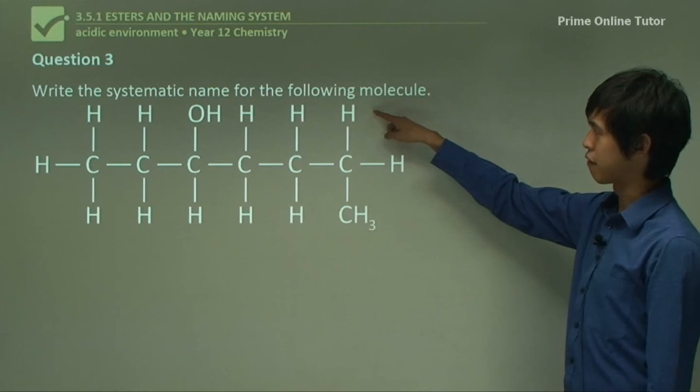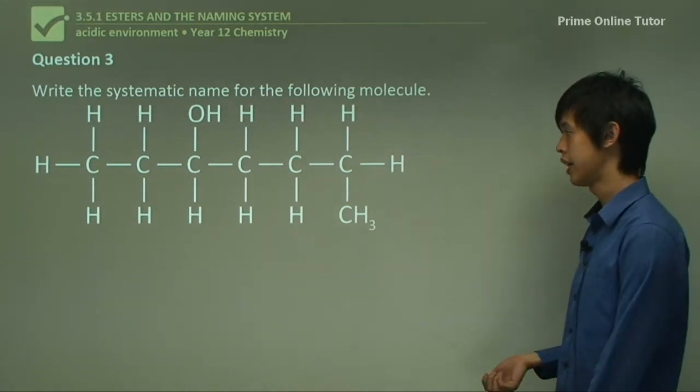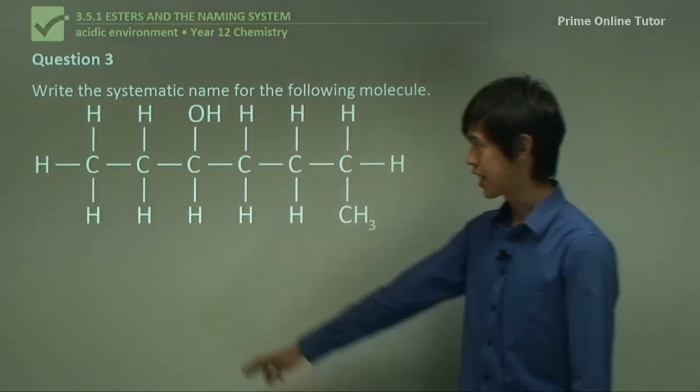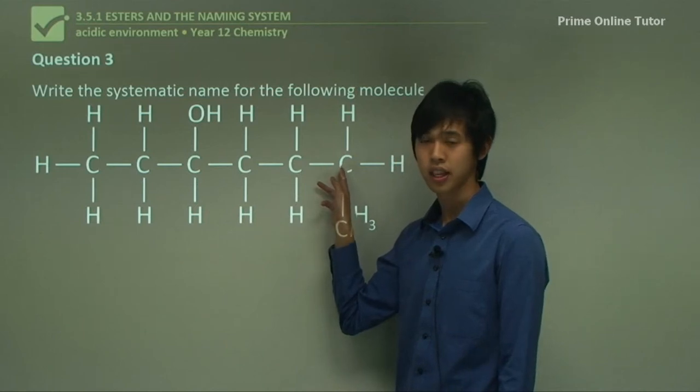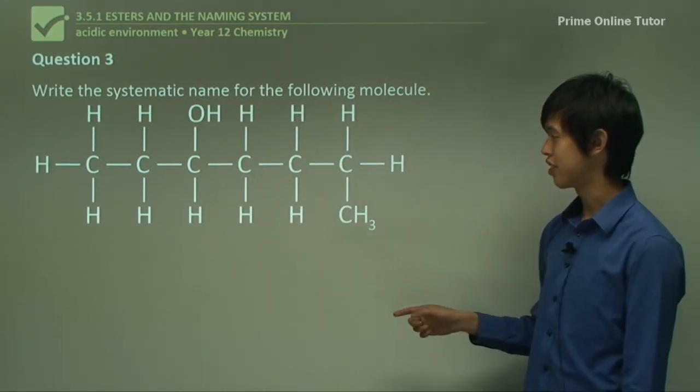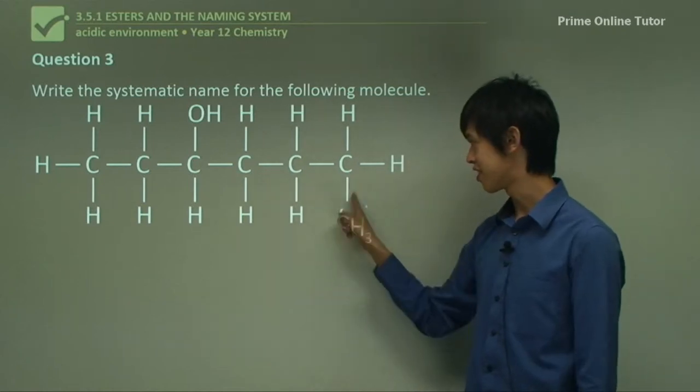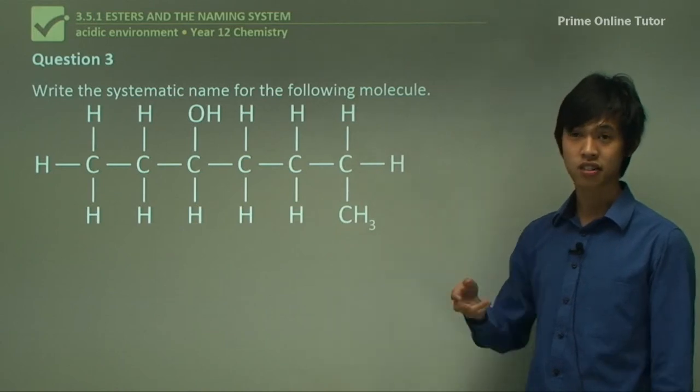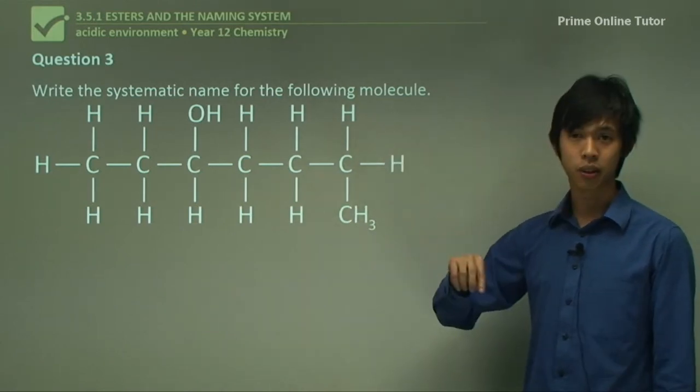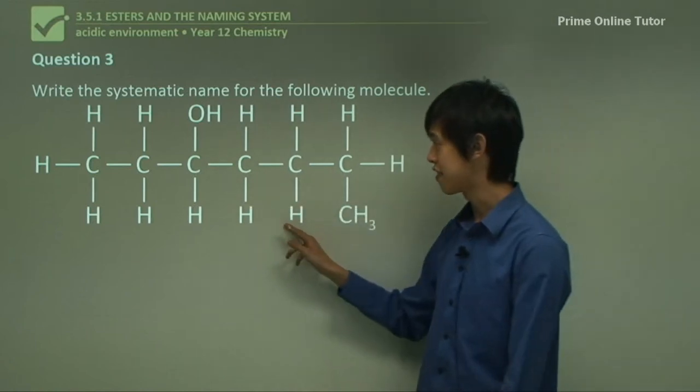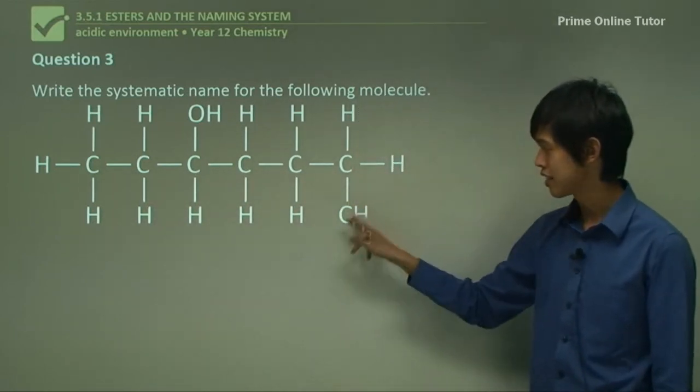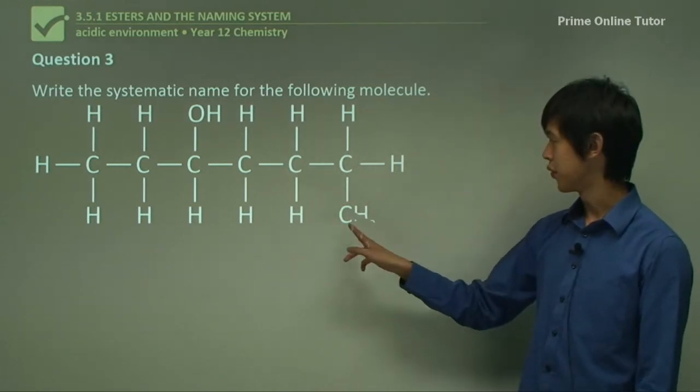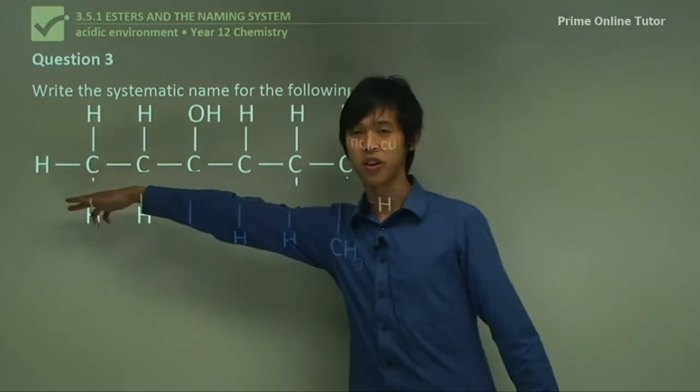Write the systematic name for the following molecule. First we count out the longest carbon chain. Now it's very tempting to say it's six: one, two, three, four, five, six. But the chain still goes on. You can see it just bends at 90 degrees. The chain hasn't been broken, hasn't stopped, and I haven't had to go back the other way. So it's actually seven carbons long: one, two, three, four, five, six, seven. There's seven carbons in this chain because I haven't had to go back to change direction.